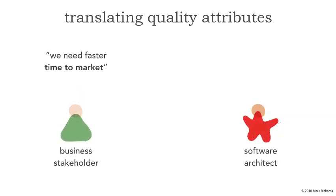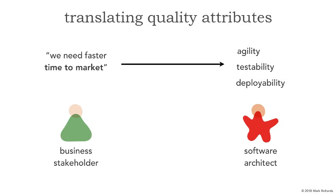Let's say that a business stakeholder's focus is time to market. That translates into ilities such as agility — that ability to respond quickly to change — combined with high levels of testability, which is not only the ease of testing but also the completeness of testing, and then deployability. Not only the ease of deployment in terms of ceremony involved, but how frequently we can deploy, and perhaps more importantly, what is the risk of deployment. If every time we deploy we break something, that's what deployability is really referring to. High levels of deployability mean we can deploy every day, every hour, and we've reduced the risk and ceremony involved.